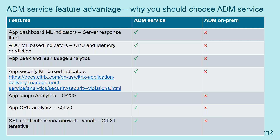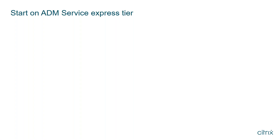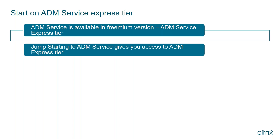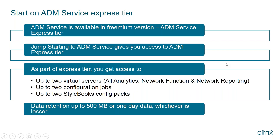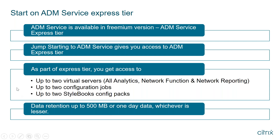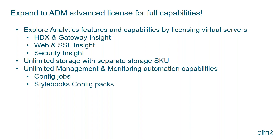You don't need to buy any license to explore the solution — you can start on the Express freemium tier. It gives access to a limited set of functionalities: two virtual servers for analytics, network functions and network reporting, two config jobs, two StyleBook config packs, and a data retention limit of 500 MB or one day of data, whichever is lesser. The good thing is there's no time-based limitation — you can explore for as long as you want before making a purchase decision. Once convinced of the value, you can move to the Advanced license for the full set of capabilities.